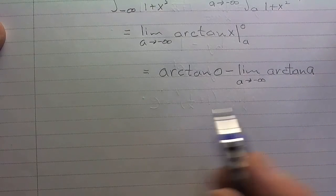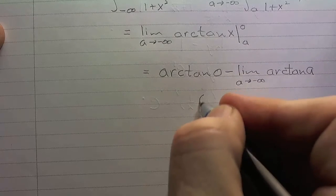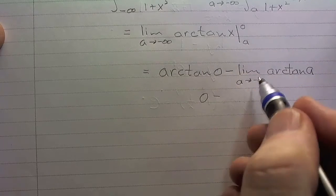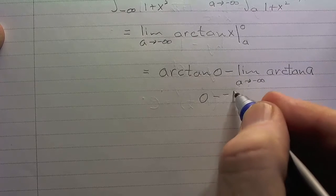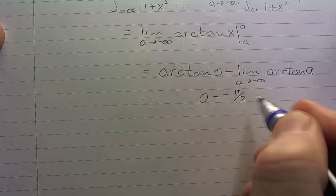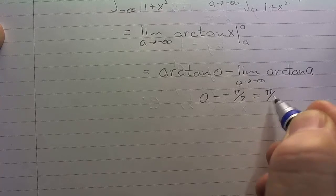We've got arctan of 0 minus the limit as a goes to negative infinity arctan of a. Now, we've already had the discussion arctan of 0 is 0, so here we've got 0 minus arctan of a as a goes to negative infinity. Well, that would be negative pi over 2. So these two negatives make a positive, so this is going to be pi over 2.